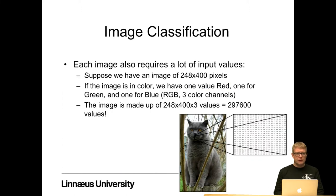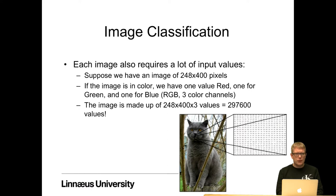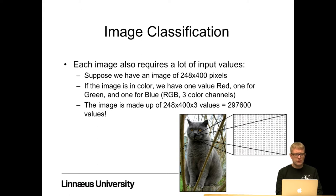Another problem is that each image requires a lot of input values. Suppose we have an image like this cat of 248 times 400 pixels. And if the image is in color, which images usually are, we have one value for red, one for green and one for blue — so RGB, three color channels. The image is then made up of 248 times 400 times three values, which is 287,600 values, which we need to fit into our classifier.